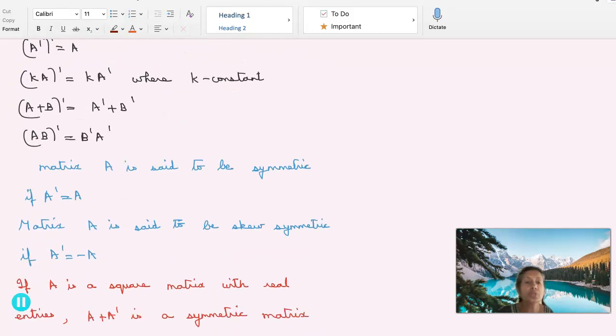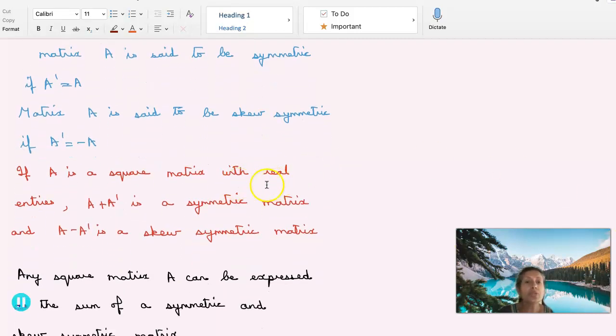A matrix A is said to be symmetric if A transpose equal to A. And what about skew symmetric matrices? Matrix A is said to be skew symmetric if A transpose equal to minus A. If A is a square matrix with real entries, A plus A transpose is symmetric and A minus A transpose is skew symmetric.